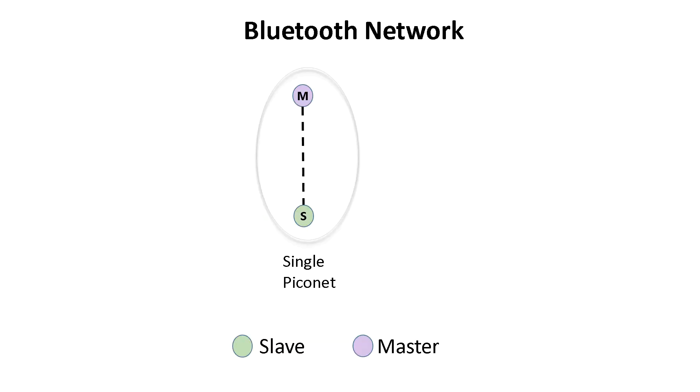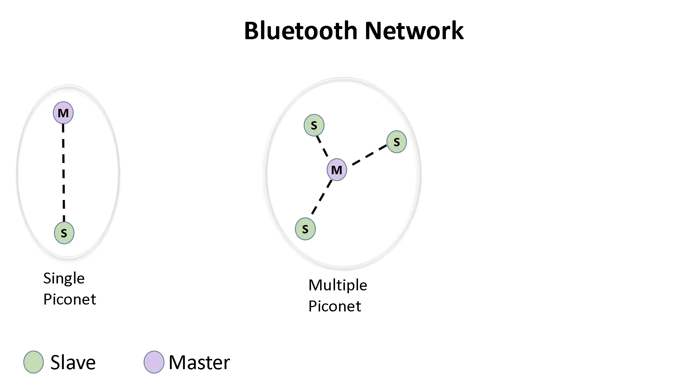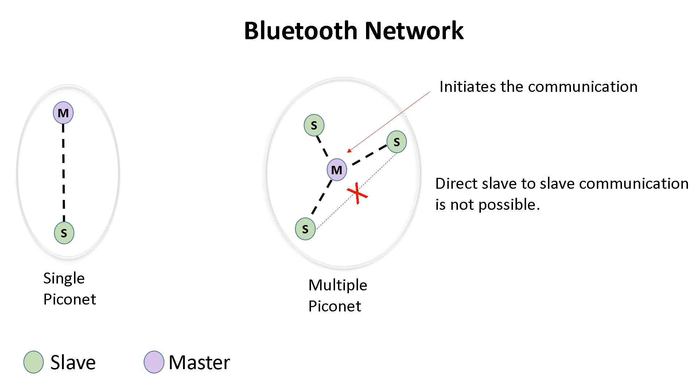A single Piconet is formed by one master and one slave. A multiple Piconet is formed by one master and multiple slaves. Now a master is the device which initiates communication with other devices and dictates when a slave device may transmit. Also, direct slave-to-slave communication is not possible. There can be a maximum of seven active slaves in the Piconet, which means only eight maximum devices including the master can communicate at any one time.